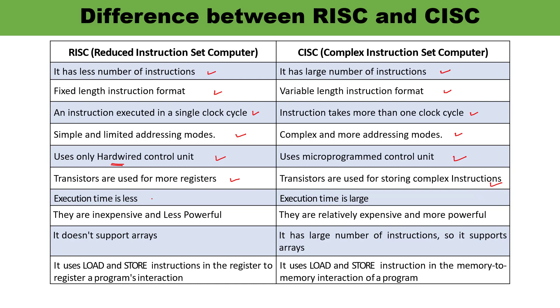Application execution time is less in RISC because of the reduced instruction set, less instructions, and fixed format. Execution time is larger in the case of CISC computers.